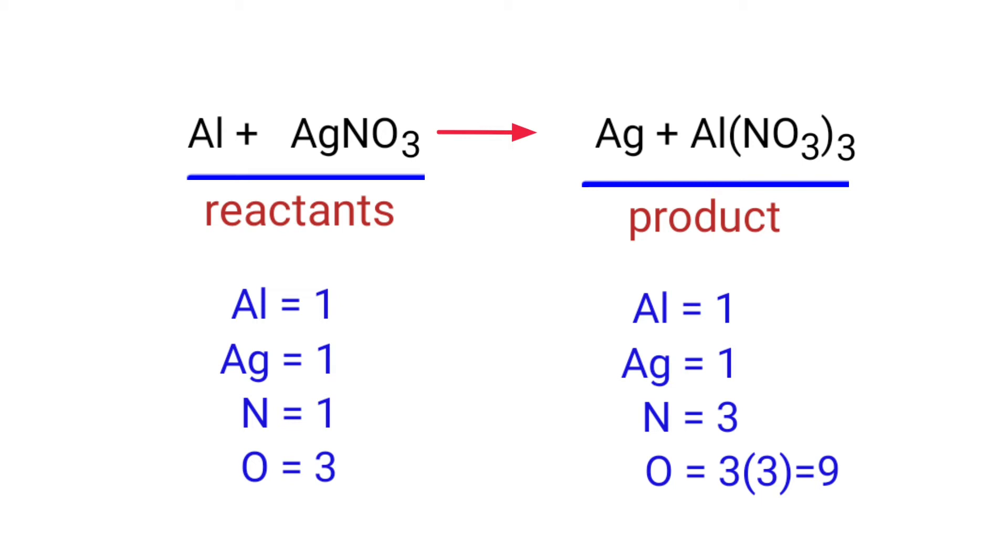The number of atoms are not balanced on both sides. To balance the chemical equation, we need to make use of coefficients. A coefficient is a number that we place in front of a chemical formula.